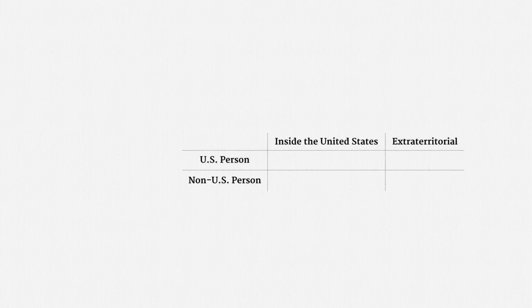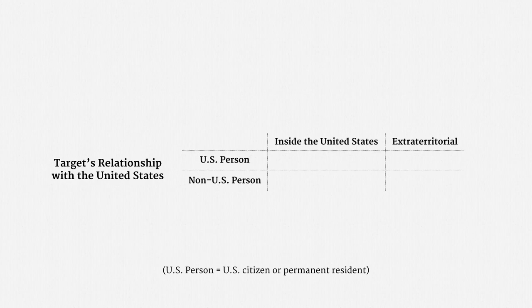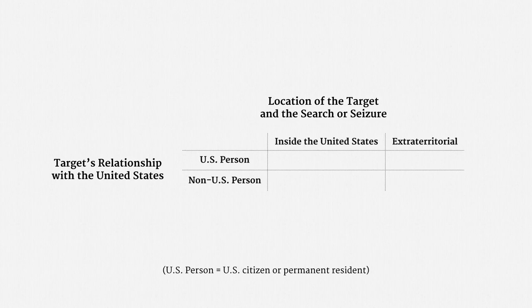The way most lawyers in this field think about extraterritoriality is a two-by-two grid. One axis maps the surveillance target's relationship with the United States — the target might be a U.S. person or might not be. A U.S. person is roughly a U.S. citizen or permanent resident. The other axis is the place where the surveillance target is located and where the search or seizure occurs. The government might be operating inside the United States or extraterritorially. For now, assume that the surveillance target is geographically located in the same place where the surveillance occurs.